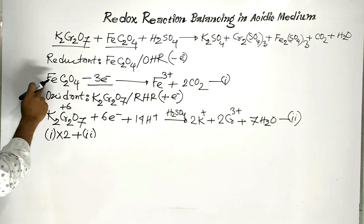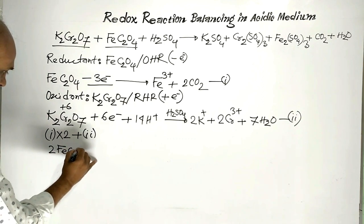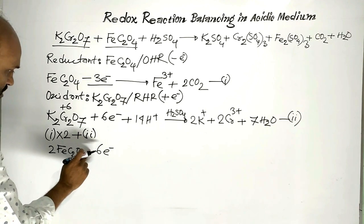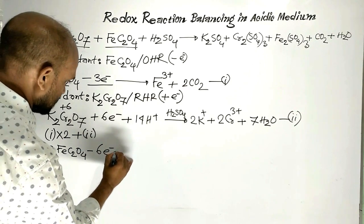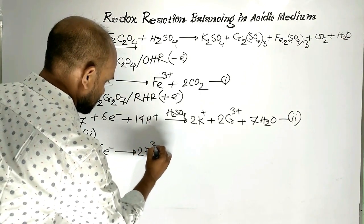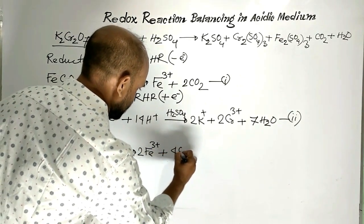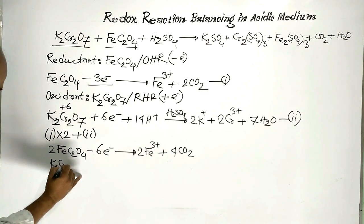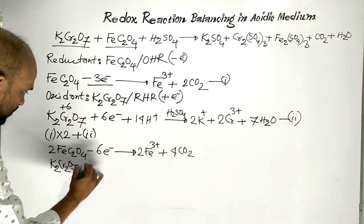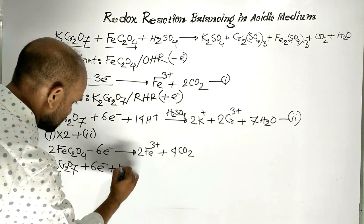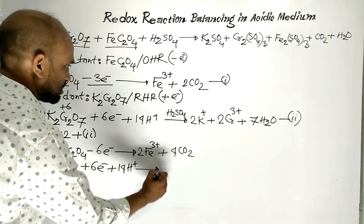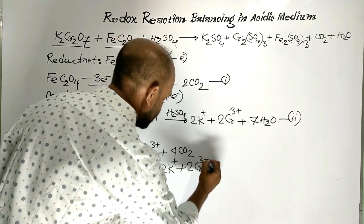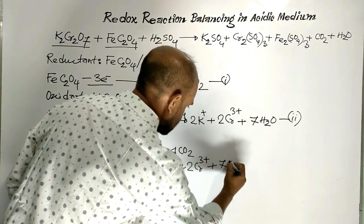Multiplying Equation one by two, we get: 2 FeC2O4 → 2 Fe3+ + 4 CO2 + 6e−. From Equation two: K2Cr2O7 + 6e− + 14H+ → 2K+ + 2Cr3+ + 7H2O.